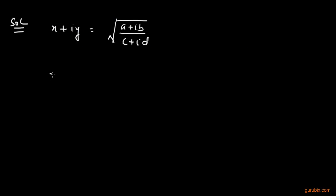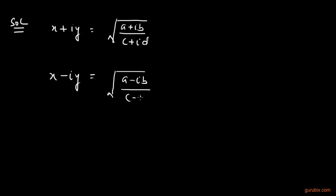Now we shall find the conjugate of this complex number. The conjugate will be x minus iota y. Similarly, the conjugate of the right-hand side complex number will be the square root of (a minus iota b) over (c minus iota d).